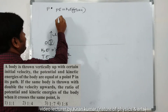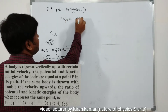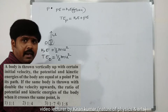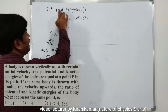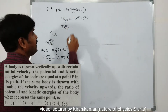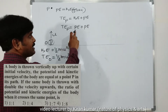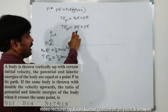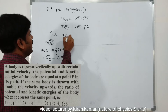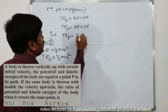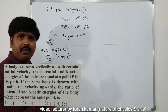The total energy at point P equals the sum of kinetic energy and potential energy. Since kinetic energy equals potential energy, we can write: total energy at P = PE + PE = 2PE. So the total energy at point P equals 2PE.